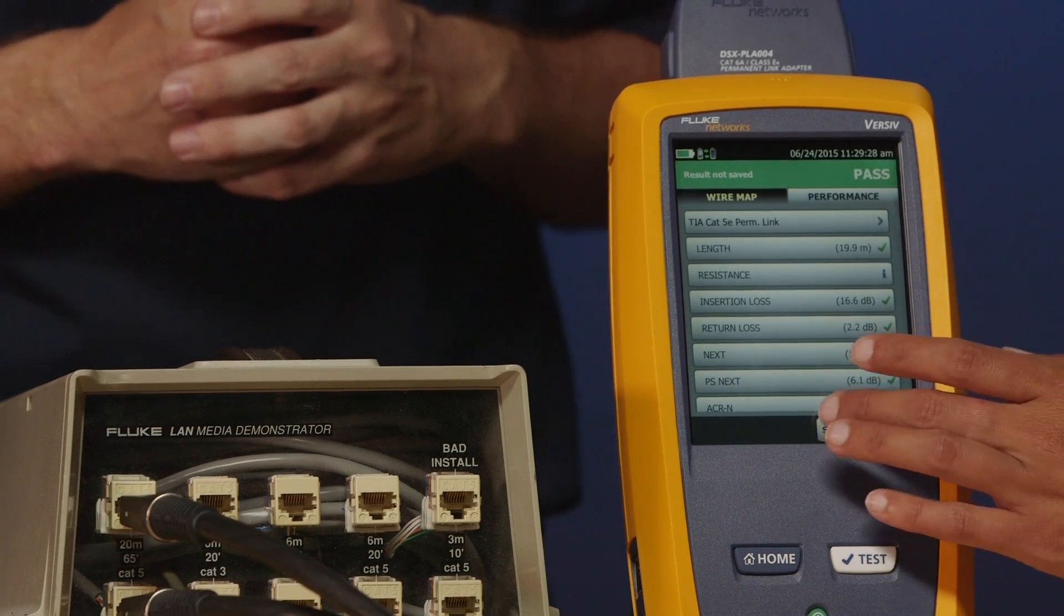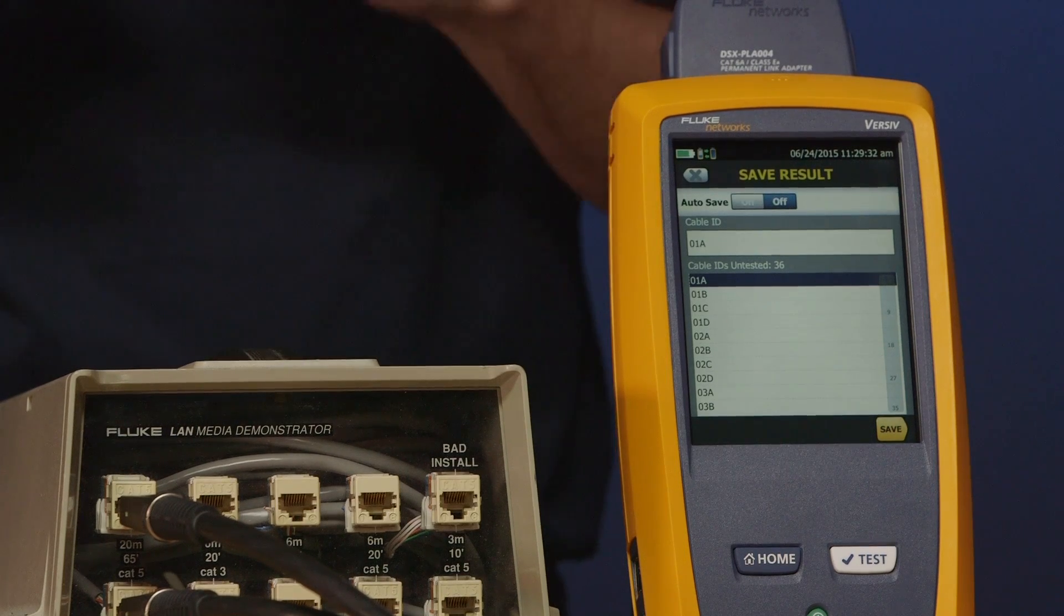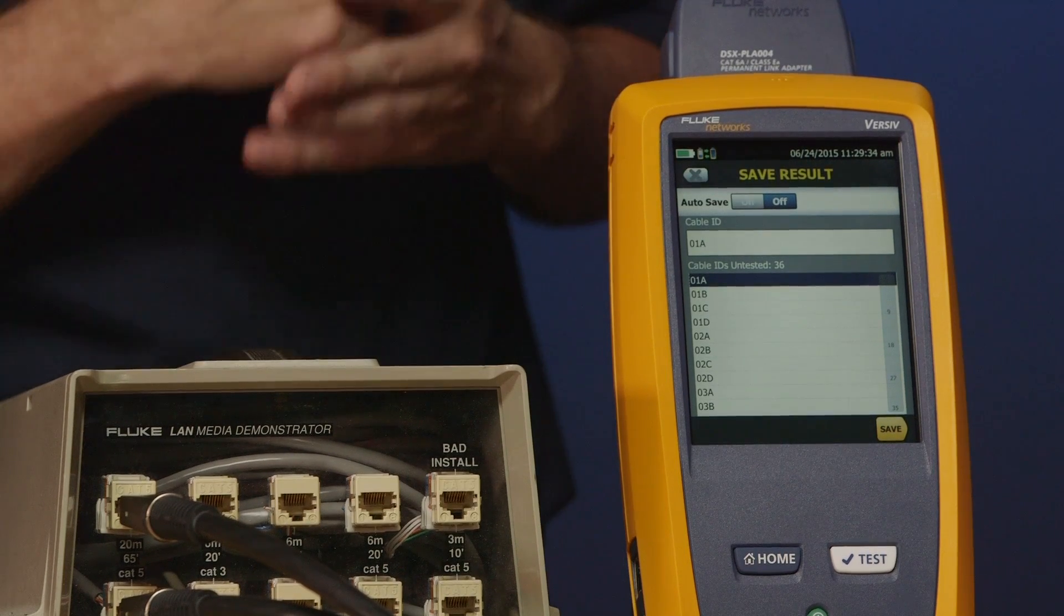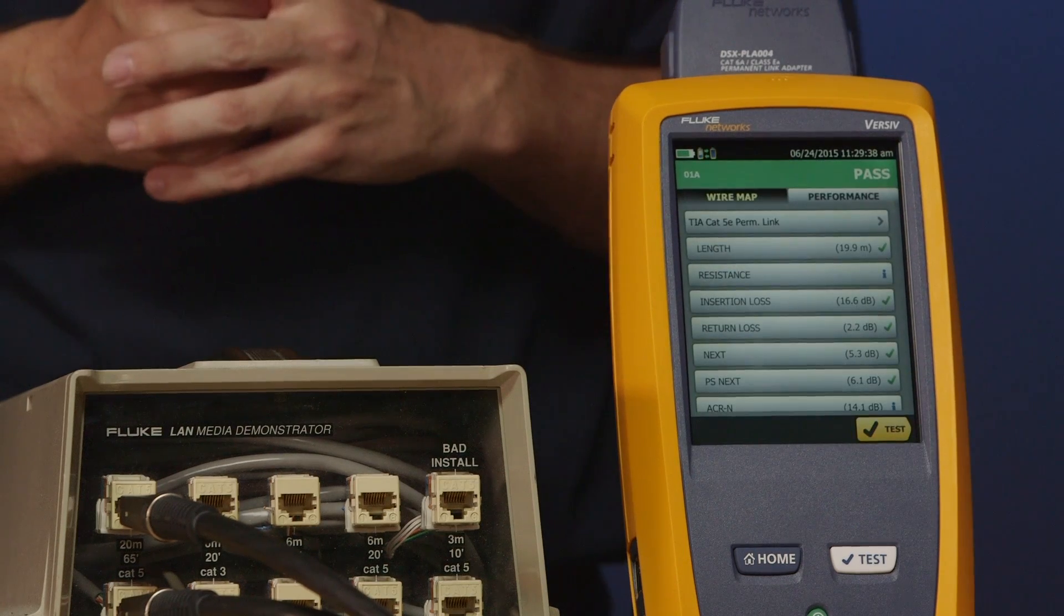Go ahead and hit save. And because we pre-configured all the cable IDs, we don't have to tap in the cable IDs. We can just go save. And we can move on to our next test.